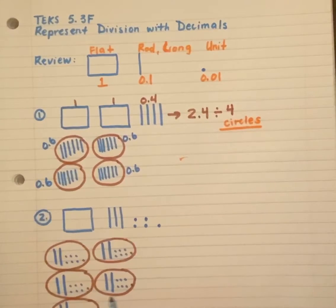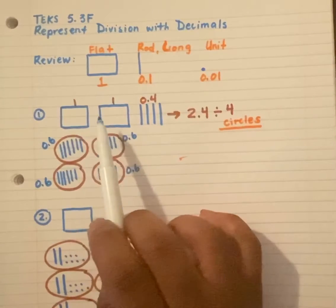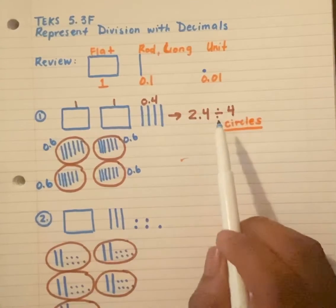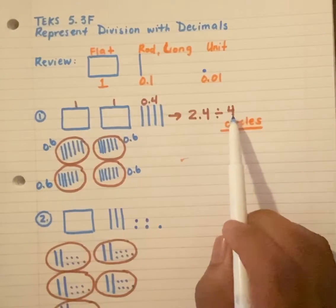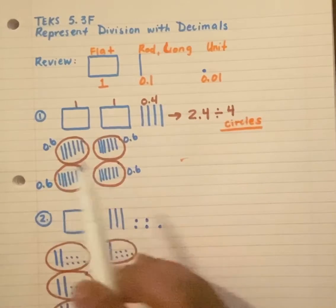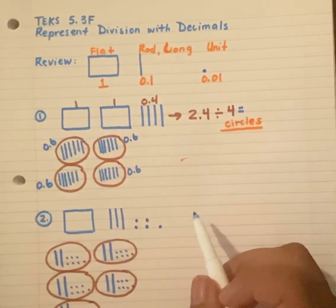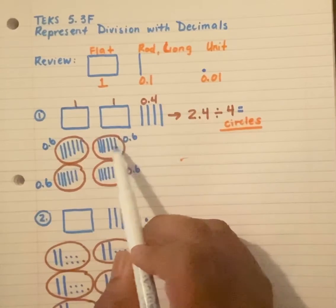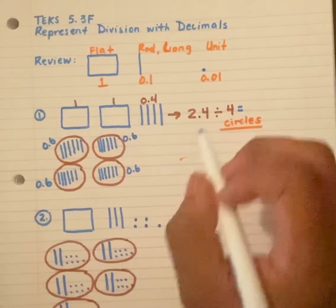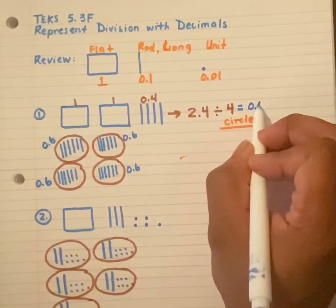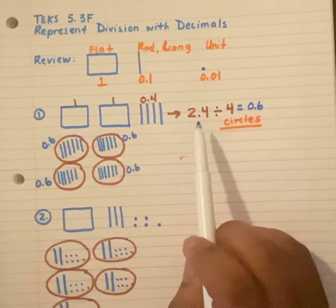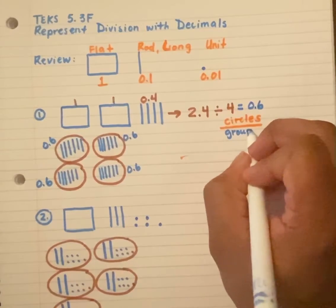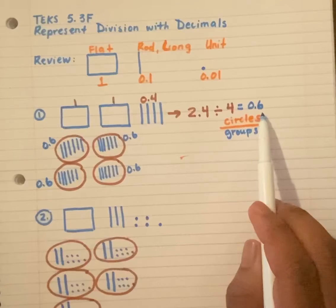So now, let's see what we've created. We started with two and four tenths. We separated or divided into four groups. One, two, three, four. But what's our answer? Our answer is how many fit in each group. Well, each group has six tenths. So we have our total, our circles or our groups, and then we have how many is in each group.